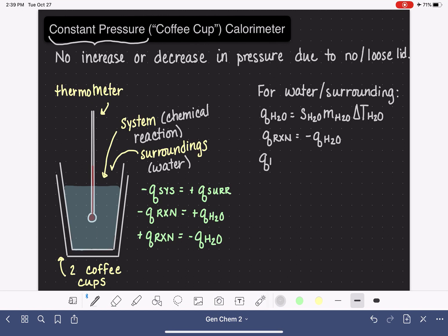We can say that the heat of a chemical reaction that's being conducted in a constant pressure coffee cup calorimeter is negative specific heat of the water times the mass of the water times the change in temperature that we observe with our thermometer that's stuck inside of the water.